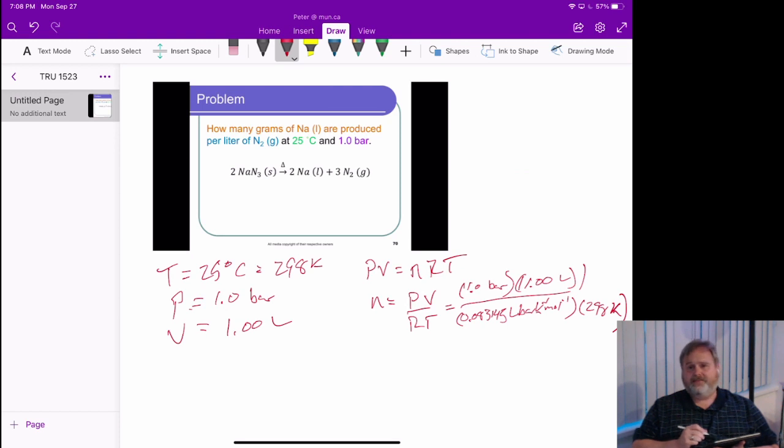So, 1 times 1, divided by 0.083145, divided by 298. And I get 0.0406 moles.